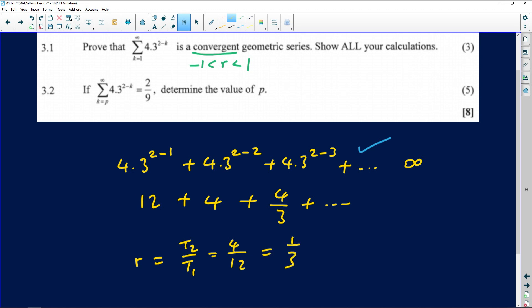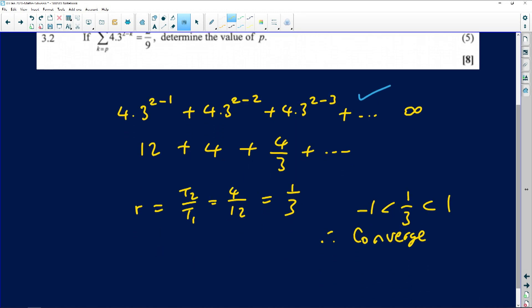1 over 3 is 0 point something. That's a number that lies between negative 1 and 1. Therefore, this series does indeed converge. Why does it converge? Because your r is between negative 1 and 1.